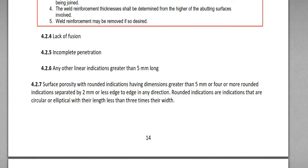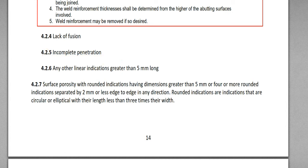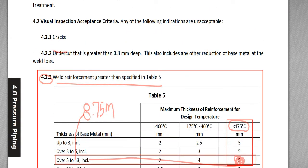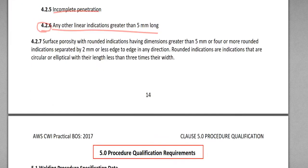4.2.4: Lack of fusion. If you see lack of fusion in pressure piping, that is a reject. 4.2.5: Incomplete penetration. If you see incomplete penetration (IP) in pressure piping, that is a reject. 4.2.6: Any other linear indications greater than 5 mm long — any indication other than IP, lack of fusion, undercut, or cracks that is greater than 5 mm long — that is also a reject.